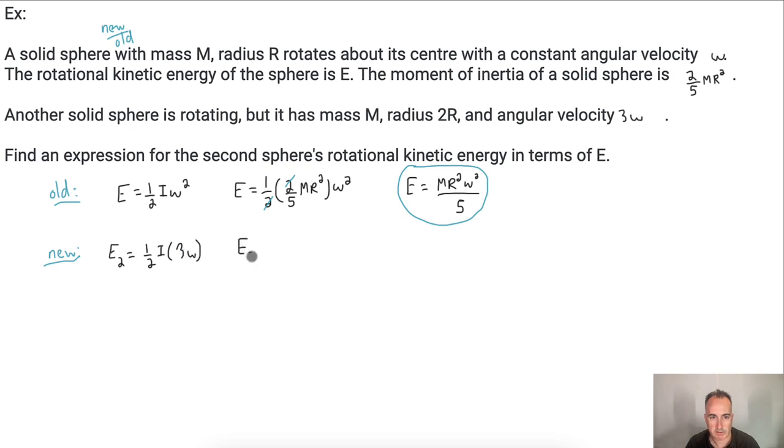But I need to delve deeper in this thing right here. So I need to go E_2 equals, let's see, it's 1 half. Remember what I is. I is 2 fifths M, which is the same mass, but radius is 2R. That whole thing is squared. All that times, I'm supposed to say, 3 omega. By the way, I forgot my squared here, didn't I? So it's supposed to be times 3 omega squared.